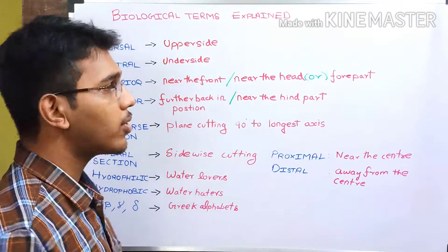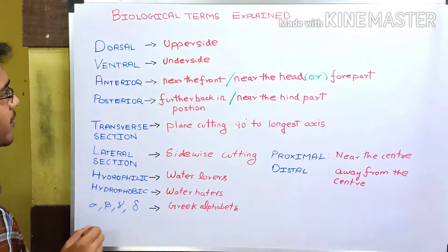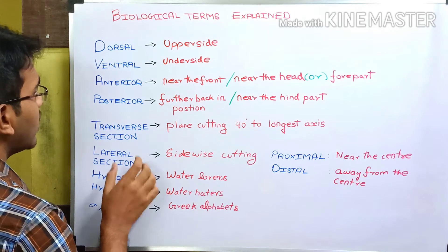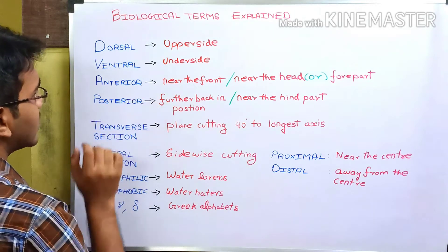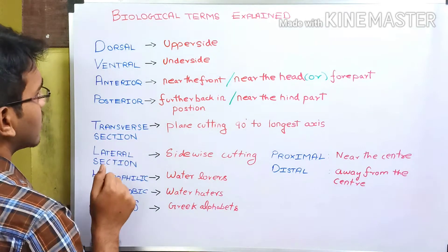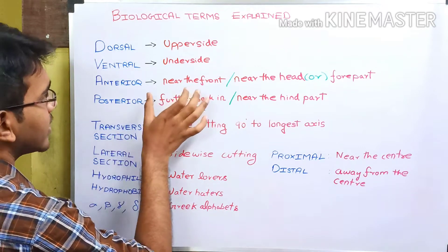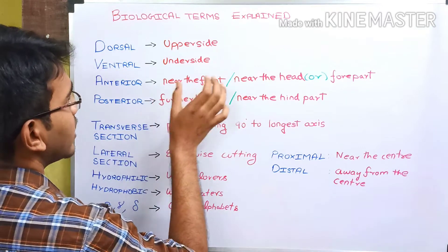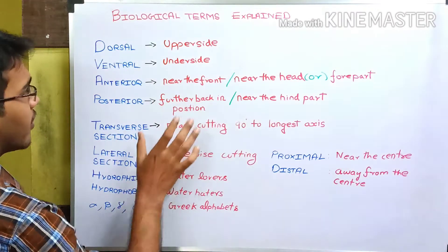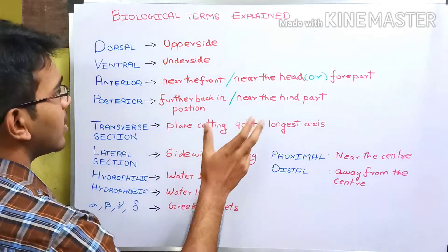Now let us discuss about anterior and posterior. These two biological terms are opposite in meaning to each other. Anterior means near the front, near the head, or the forepart. Posterior means further back in position or near the end part.